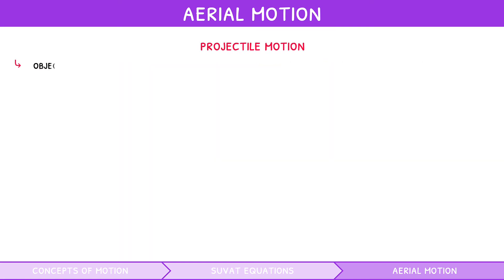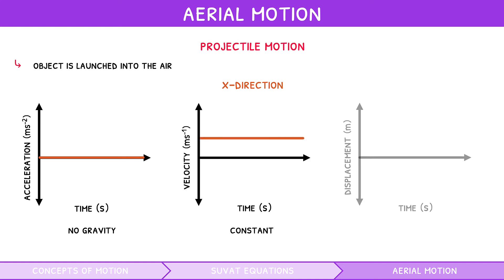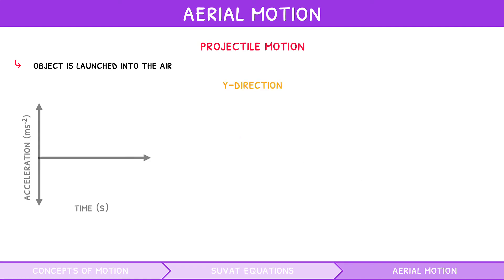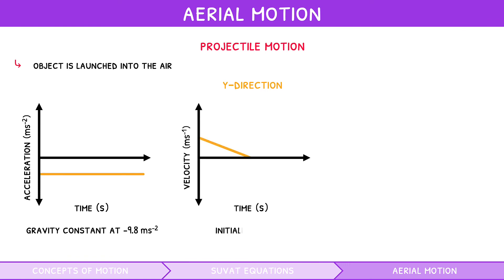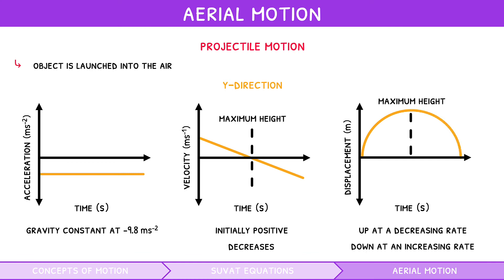During projectile motion, the object is launched into the air, often meaning it has motion in the x and y directions. In the x direction, there is no gravity, so acceleration is zero. Thus, the initial x velocity remains constant, and displacement increases until the object hits the ground. In the y direction, gravity is constant at minus 9.8 metres per second squared. If the object is launched upward, y velocity is initially positive but decreases. Displacement curves up at a decreasing rate and then down at an increasing rate. At maximum height, velocity is zero.